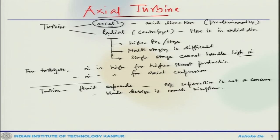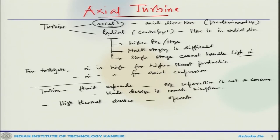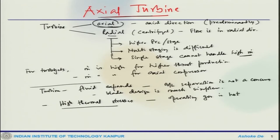That does not mean turbines are free of any problem. The issue which turbines actually face is high thermal stresses — the blades are exposed to high thermal loading because the operating gas is hot. If you recall, the turbine is the component connected downstream of the combustor, so whatever combustion products and hot exhaust gas come out of the combustor enter the turbine, and they are extremely hot. So the thermal loading and thermal stresses are quite high for the turbine, rather than issues like boundary layer separation.